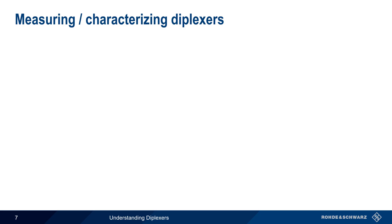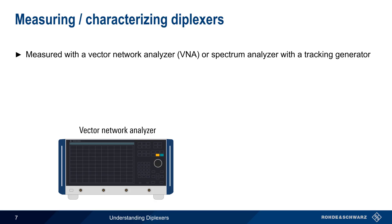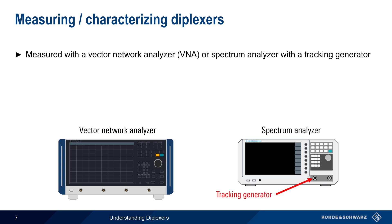Diplexor characteristics and performance are most often measured using a vector network analyzer, but in many cases it's also possible to use a spectrum analyzer with a tracking generator. As mentioned a few moments ago, diplexors generally do not require high-performance filters, so the instruments used to measure diplexors normally do not require a very high dynamic range.